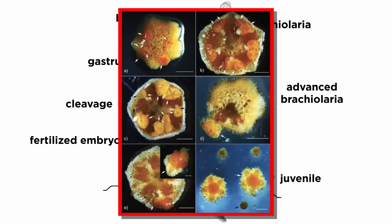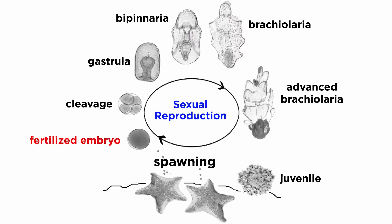However, some species do brood young that burst from the mother. Most species that do not give live birth release eggs that hatch into free-swimming bipinnaria larvae, and metamorphosize into brachiolaria larvae, which in turn metamorphosize into sexually immature juveniles.